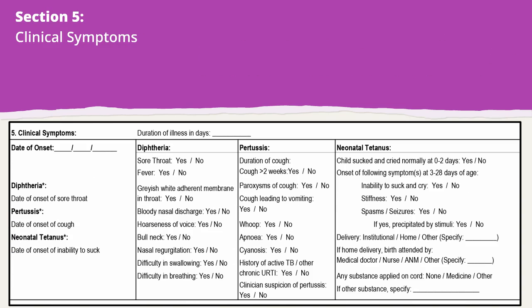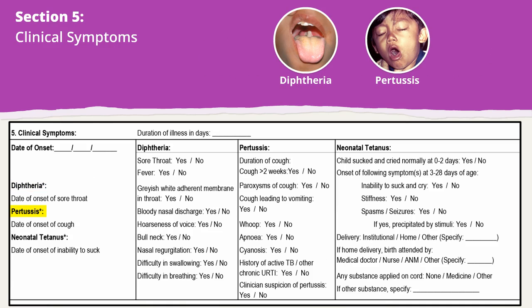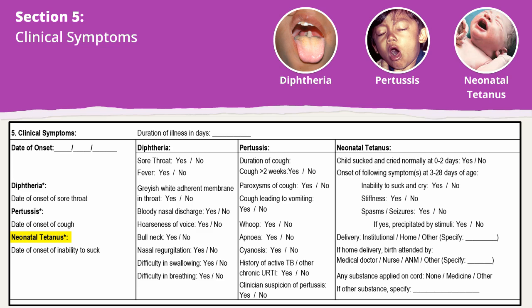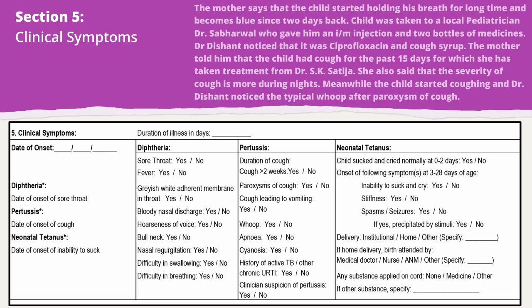Section 5 covers clinical symptoms for all three diseases: diphtheria, pertussis, and neonatal tetanus. Note that the date of onset for diphtheria is sore throat, cough for pertussis, and inability to suck for neonatal tetanus. In this case, the date of onset of cough is 28th March, and the duration of illness from onset of cough to notification is 18 days.